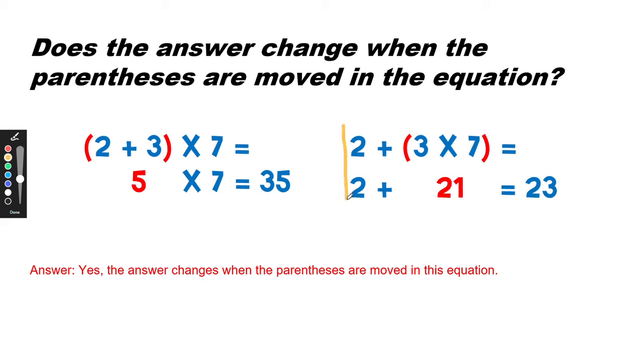On the right-hand side, the parentheses are surrounding the 3 times 7. So the first thing we would do is multiply 3 times 7, and 3 times 7 equals 21. Then we would add the 2 plus 21 equals 23.